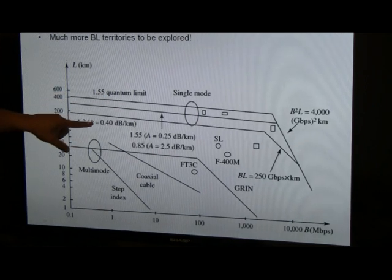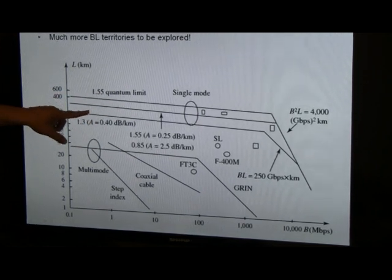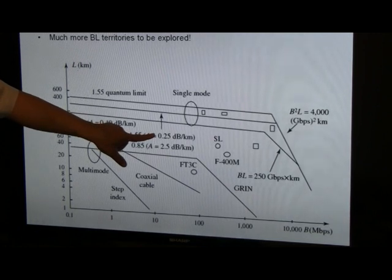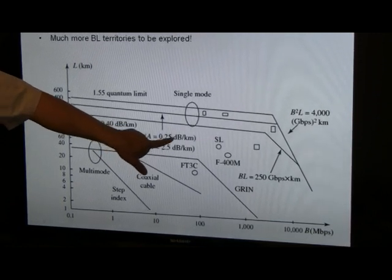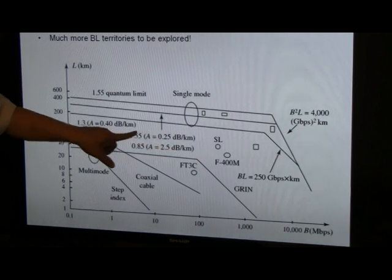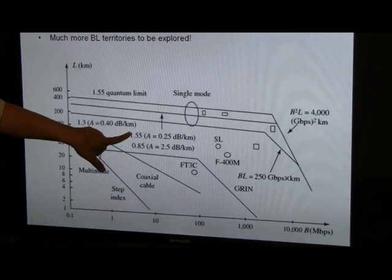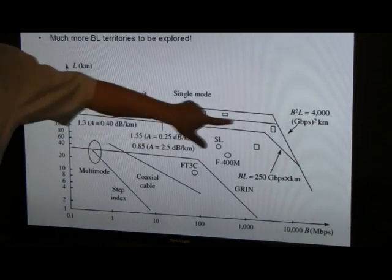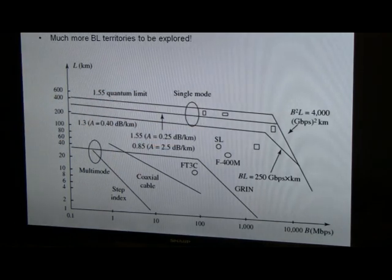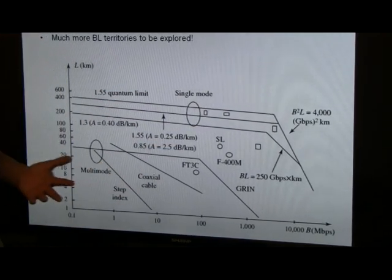Whereas for the single-mode fiber, what we have here is that the losses are a lot smaller, 0.25 dB per kilometer over 1.55 micron. This is due to attenuation from the earlier derivation that we had before.